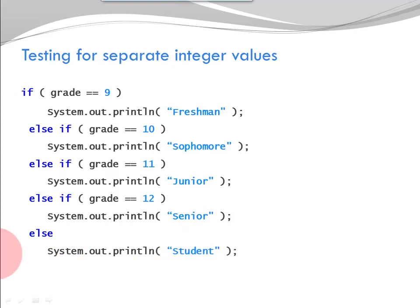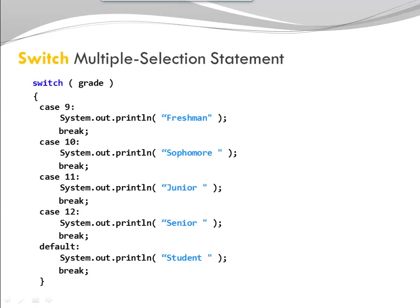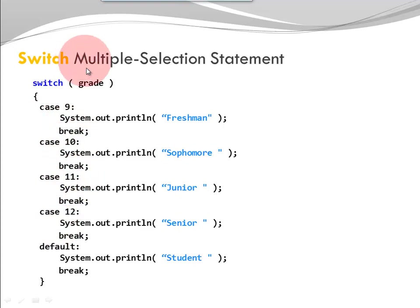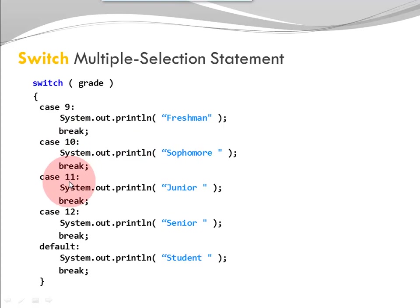Java provides a special syntax for this situation. Here you can see it as a switch statement — notice the keyword switch. I provide a variable or expression that can take on different values. And here I provide a number of different cases, where I describe the different values I'm interested in. If my grade happens to be 9, print freshman. If 10, print sophomore. If 11, print junior. If 12, print senior. Default, print student.